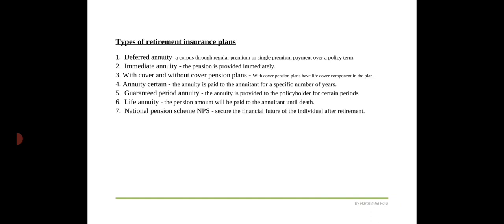The next type is life annuity — under the life annuity plan, the pension amount will be paid to the policyholder until death. After choosing the option with spouse, the amount of pension will be given to the spouse of the policyholder in case of the policyholder's death. The last type is the national pension scheme (NPS), introduced by the government of India to secure the financial future of individuals after retirement. The money invested in NPS is put in equity and debt funds to generate returns.